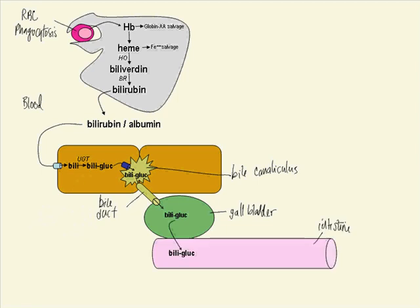Conjugated bilirubin in the gallbladder is emptied into the intestine where bacteria convert it to urobilinogen, which is eventually oxidized and eliminated in the stool. A small amount of urobilinogen leaches into the blood and is normally detectable in the urine.